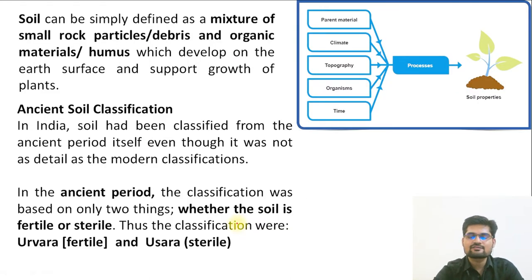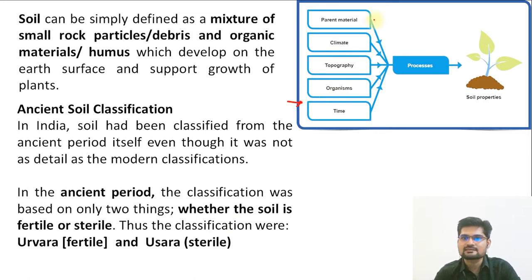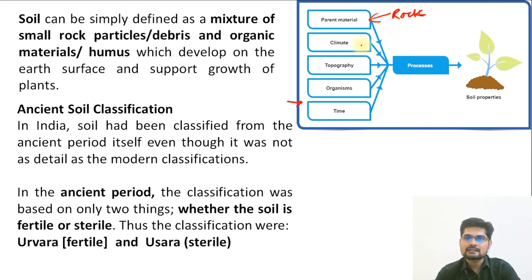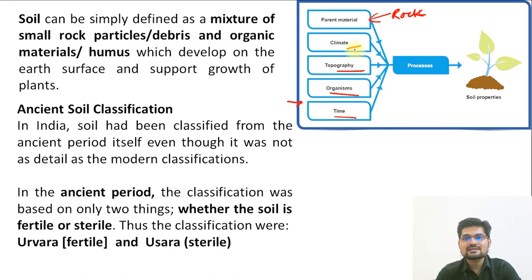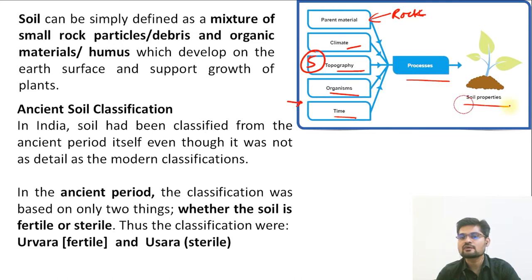The first important thing is the formation of soil. Looking at this image, we can see the factors. The parent material, or what we call the bedrock, is the parent material. Then there are climatic factors, topographical factors like slope, gradient and altitude, then organisms, and then time. These are the five major factors that lead to the formation of soil.